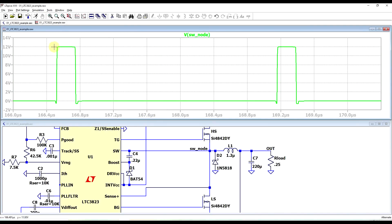So the switching node varies between the supply voltage, 12 volts, down to negative something value when the diode is conducting, and then back to zero when the low side is also switched on.